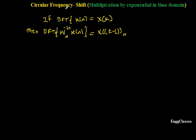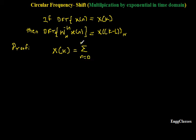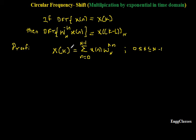It is also known as circular frequency shift because X[k] is the frequency domain signal, and the shift in that signal is X[k minus L]. To prove this, let me begin the proof. Consider the expression for X[k]: X[k] is nothing but the DFT, which equals the summation from n equal to 0 to N minus 1 of x[n] times W_N to the power k times n. This is the definition of DFT, where k varies from 0 to N minus 1.